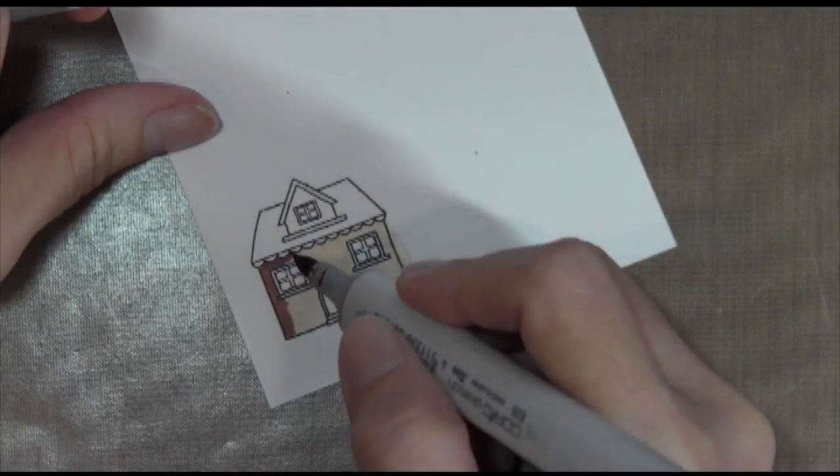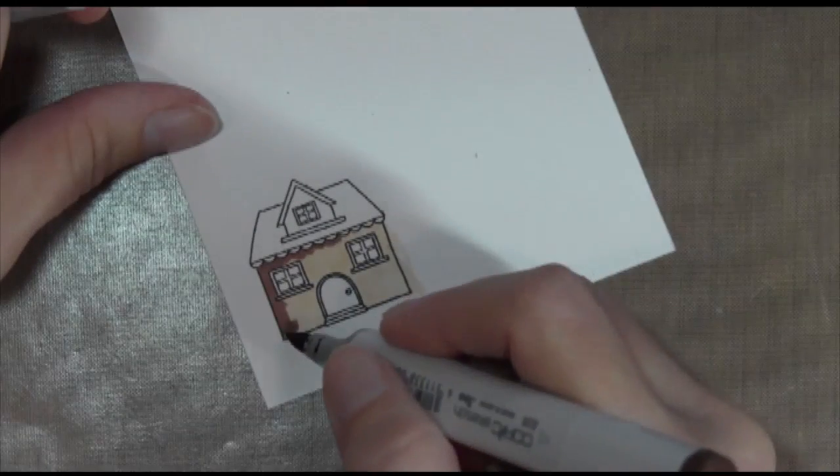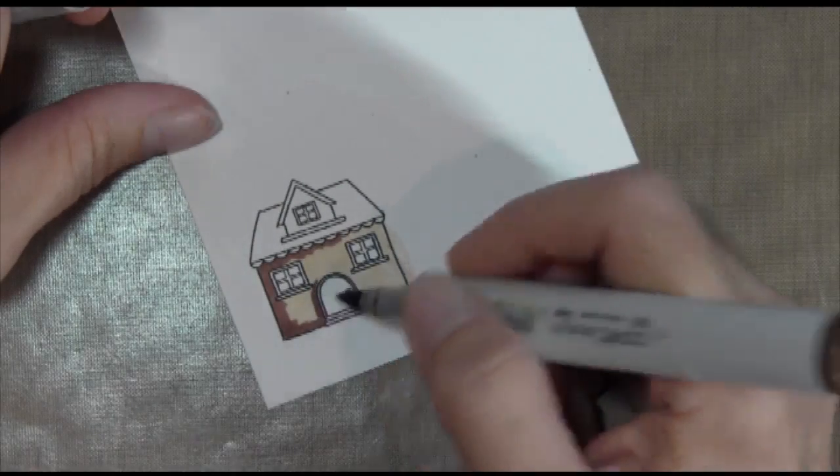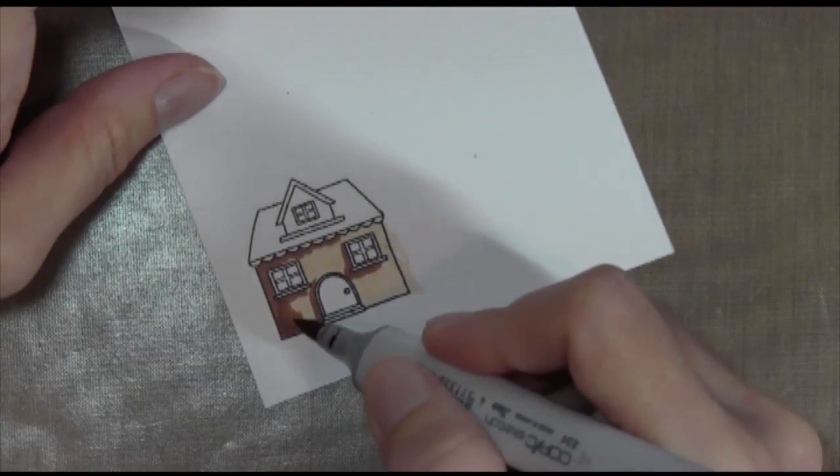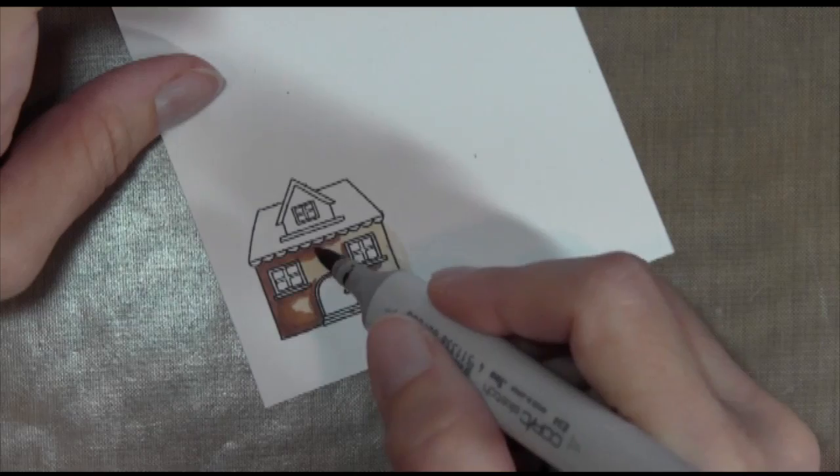And then I'm going to take my dark color and go along the edges and along the shadow areas. When I'm doing a house, I like to do dark on the left and bottom sides of the windows. It makes the windows pop out a little bit.